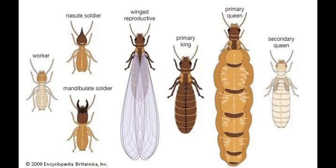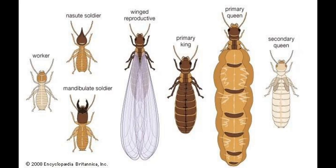The primary queen and primary king establish the colony, and then they produce the first workers. As the number of workers increases, workers start to feed the primary queen and primary king. At first the primary queen can digest wood, but as workers start to feed them with saliva secretion, they lose this ability to digest wood. Because of this, they don't get any wood particles and live much longer than any soldier or worker.